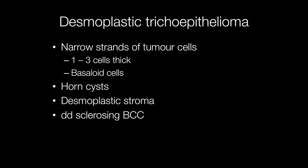Histologically, desmoplastic trichoepitheliomas are composed of narrow strands of basaloid cells, 1 to 3 cells thick, and these cells lie in a desmoplastic stroma. And here is the problem: because the cells are basaloid and because the stroma is desmoplastic, they can be misdiagnosed as sclerosing basal cell carcinomas.